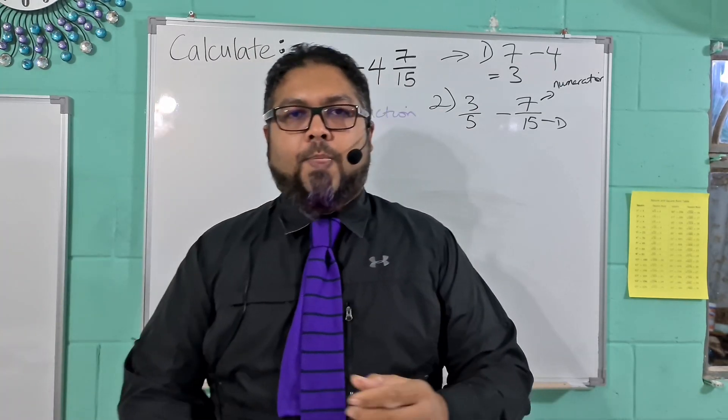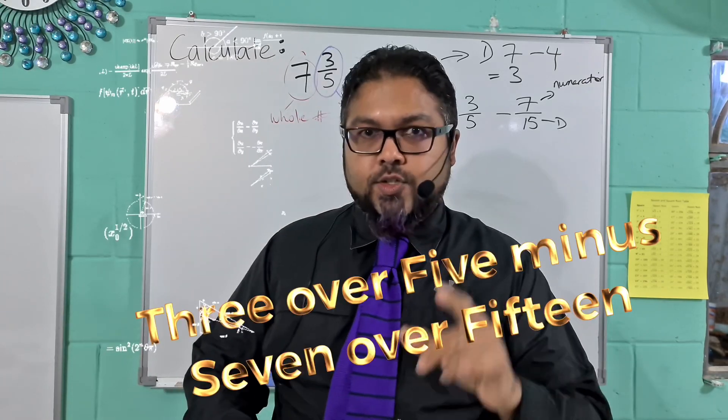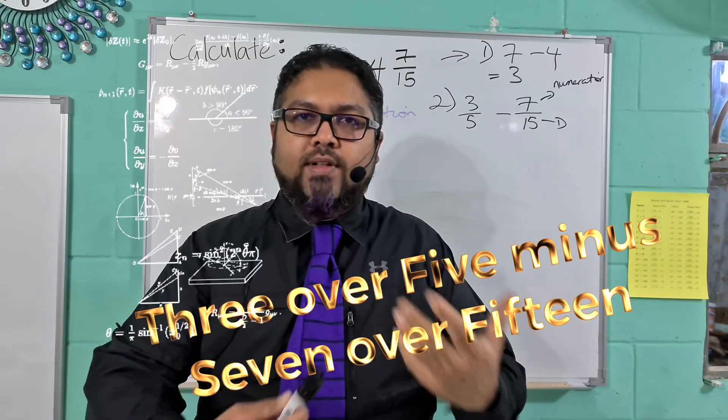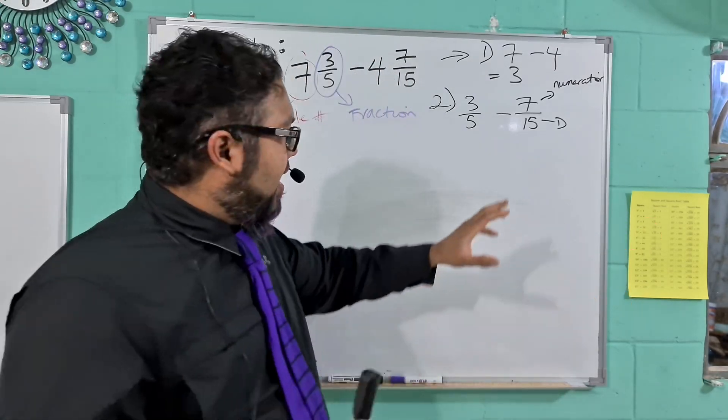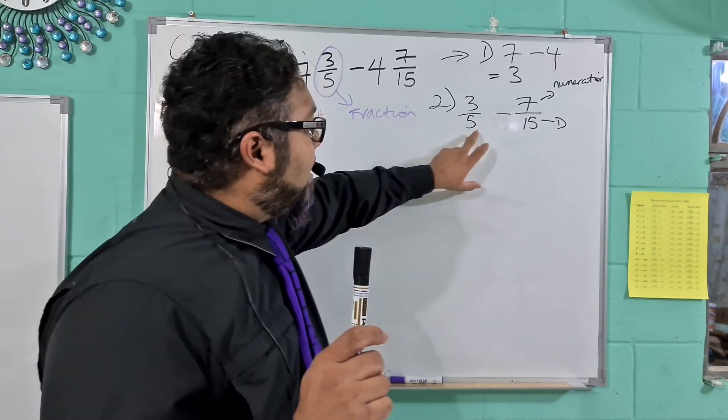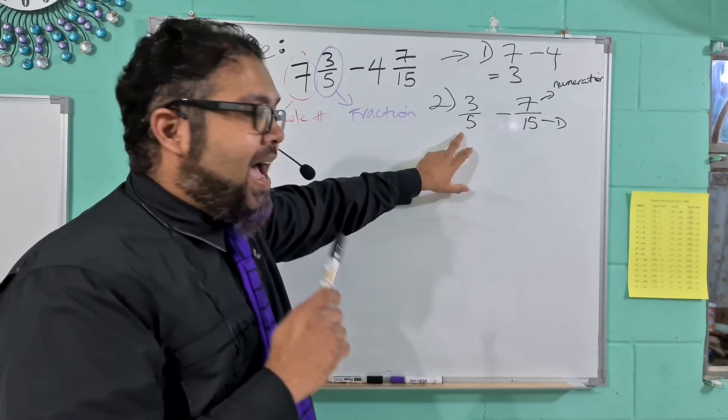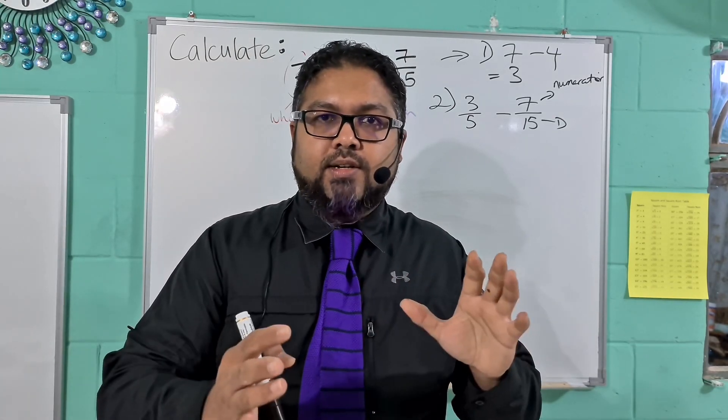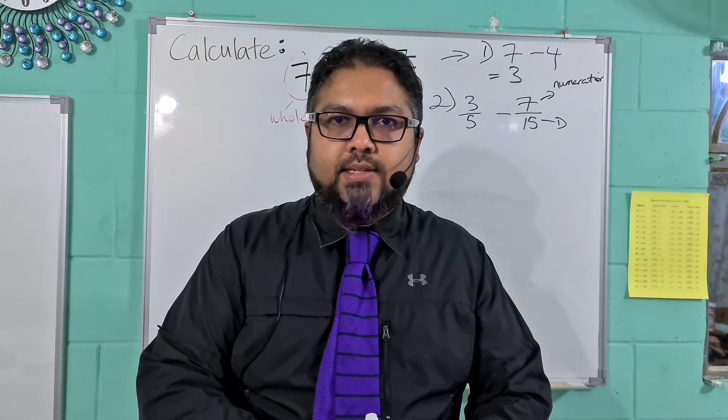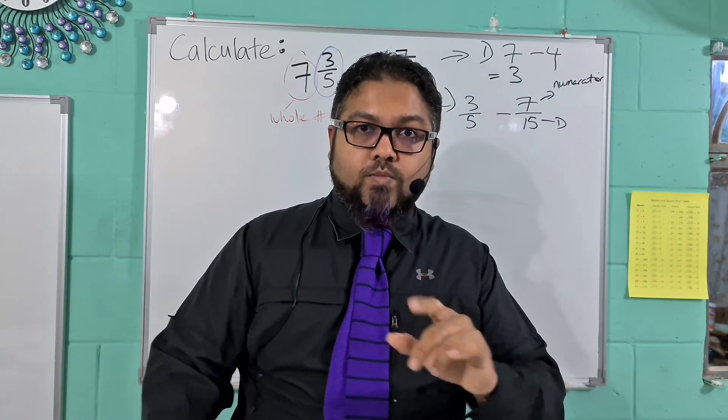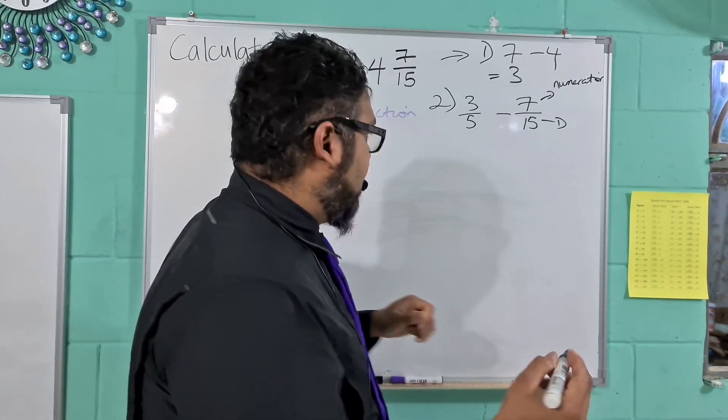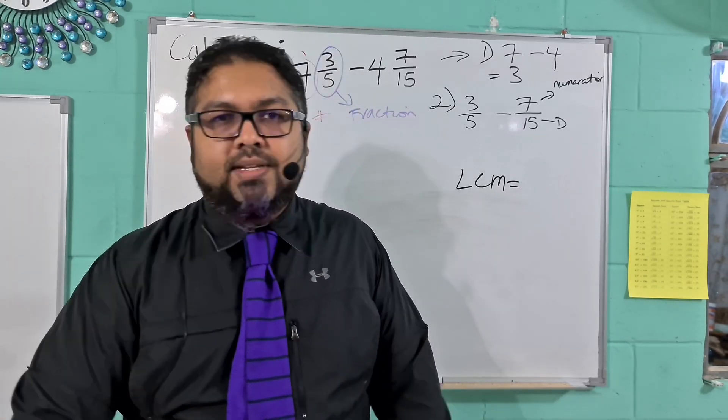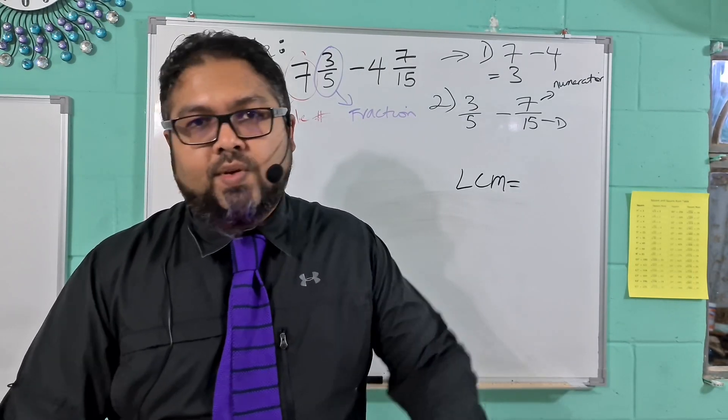So essentially we have 3 fifths minus 7 over 15. Now what do we have to do? We have to essentially take 3 over 5, which is a small one, and create an equivalent fraction. We have to find a number that is divisible by 15 and divisible by 5. And when we have that number, we put both of the fractions, we convert both of the fractions to a fraction with that as a denominator. So the first thing we do is we start getting the LCM, the lowest common multiple.